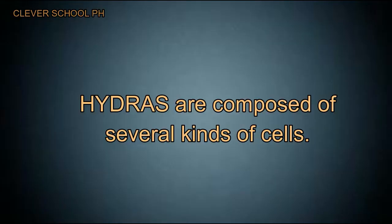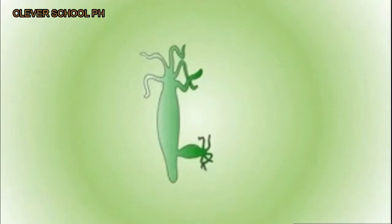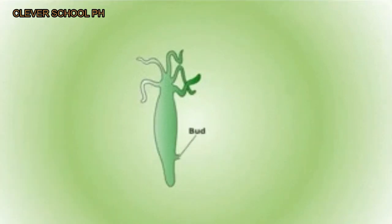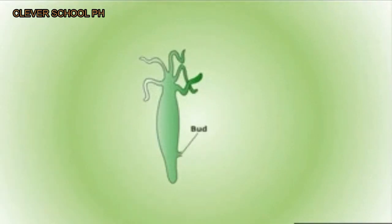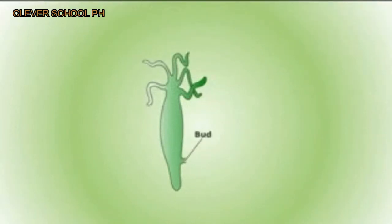Hydras are composed of several kinds of cells. As budding begins, undifferentiated cells on the side of the parent hydra undergo repeated divisions, producing a small mound of cells. These cells continue to divide, and in a few days a small complete hydra with a mouth and tentacles is formed. The hydra bud eventually separates from the parent. Both hydras and sponges can reproduce sexually and asexually.